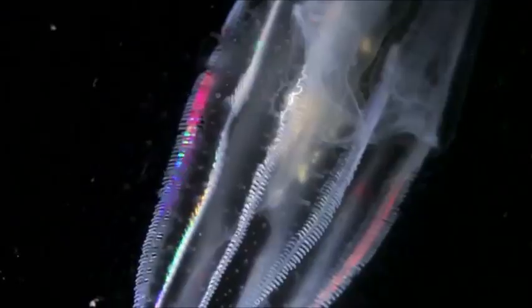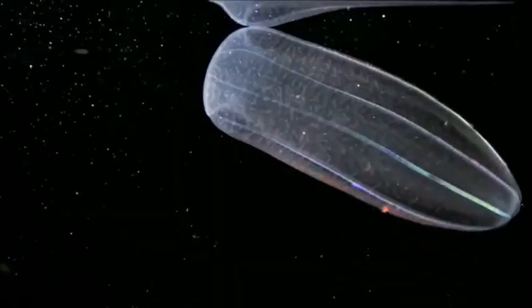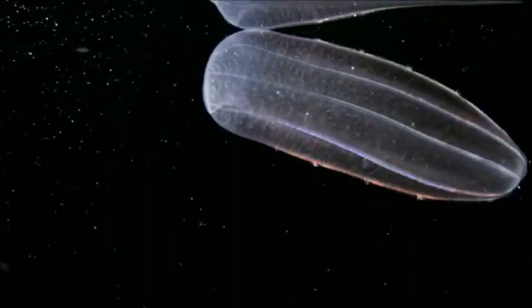The comb rows diffract light to create a rainbow display as they swim. Some comb jellies additionally exhibit bioluminescence, or the emission of light by chemical reactions.